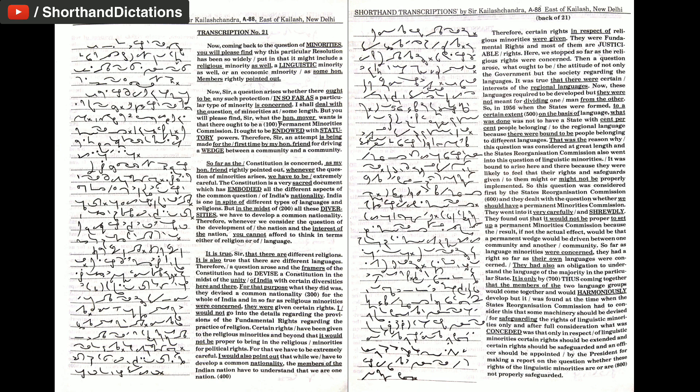It was bound to arise here and there because they were likely to feel that their rights and safeguards given to them might or might not be properly implemented. So, this question was considered first by the states' reorganization commission and they dealt with the question whether we should have a permanent minorities commission. They went into it very carefully and shrewdly.